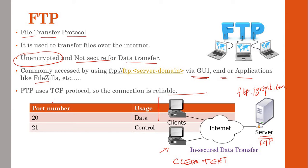FTP uses TCP protocol. When a client requests a file, the server replies and delivers all packets, making it reliable. TCP ensures reliability — whatever you request will be delivered. However, the main drawback remains that FTP is unencrypted and not secured.